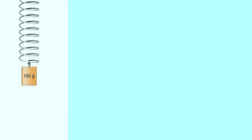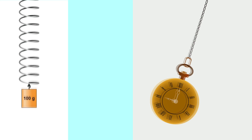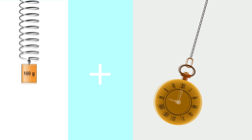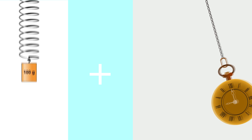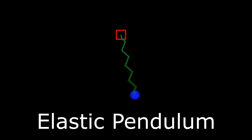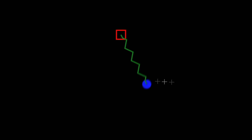What happens if you take a Hooke's law spring and a pendulum and you put them together? You get a springdulum, or more formally known as the elastic pendulum. Let's derive the equations of motion for this elastic pendulum together using Lagrangian mechanics.